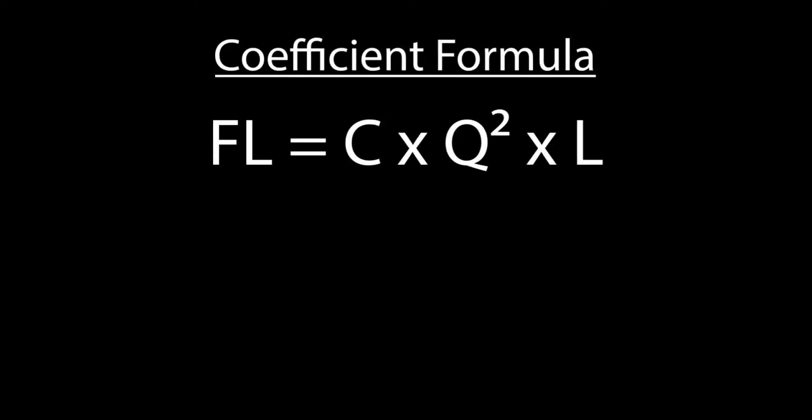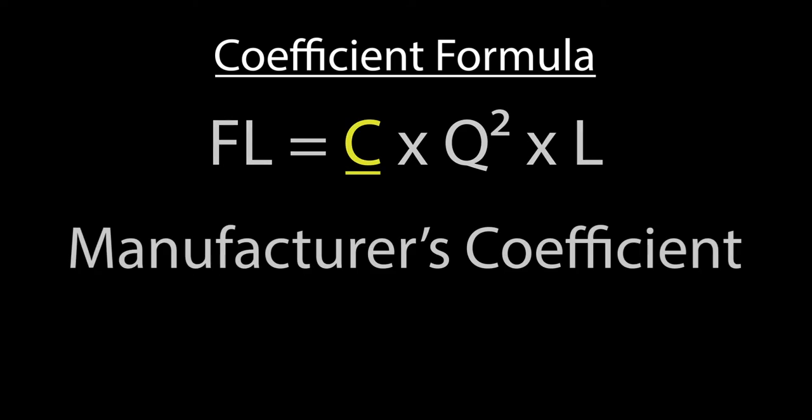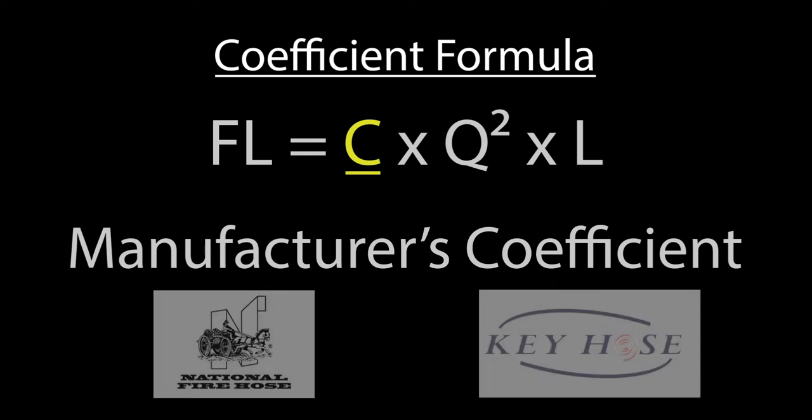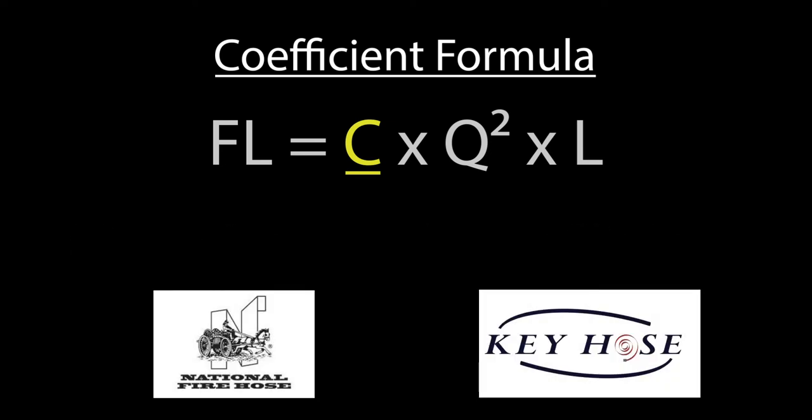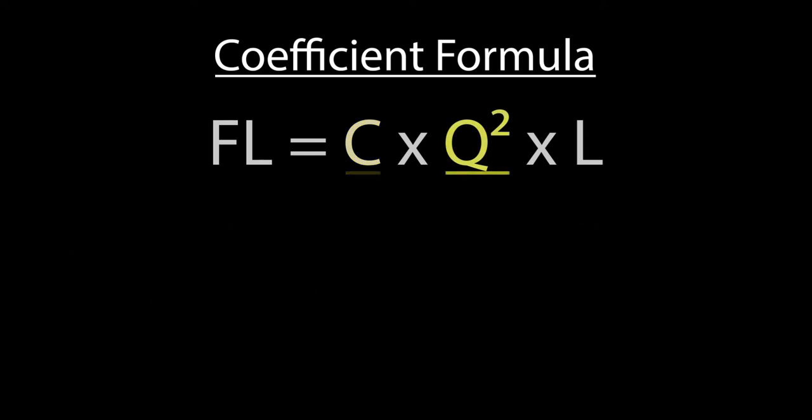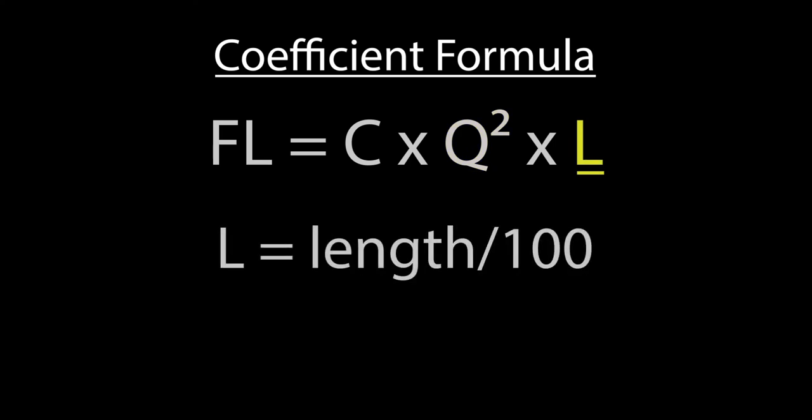To obtain the theoretical friction loss based on the coefficient formula, begin with the friction loss coefficient. Keep in mind that this number does vary between manufacturers and models of hose. Multiply by Q squared—Q is our GPM divided by 100. Finally, multiply that by L, which is the length of hose divided by 100.